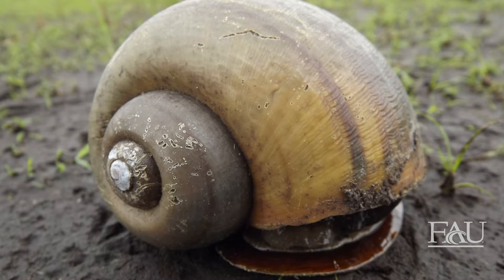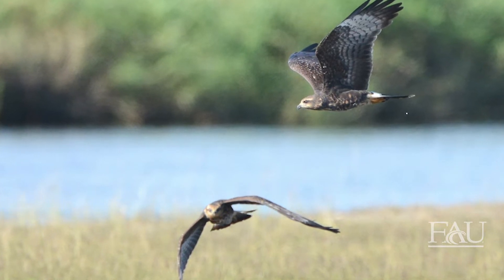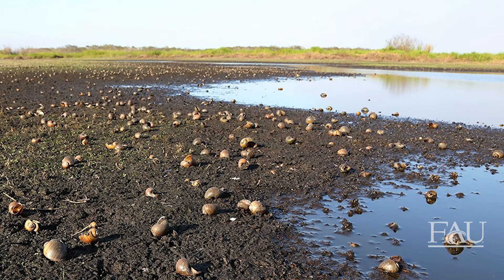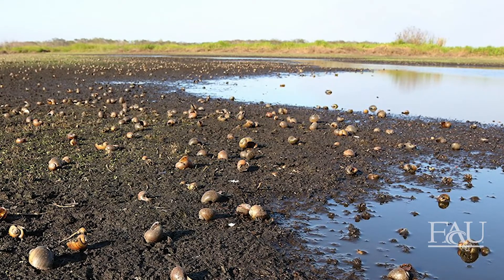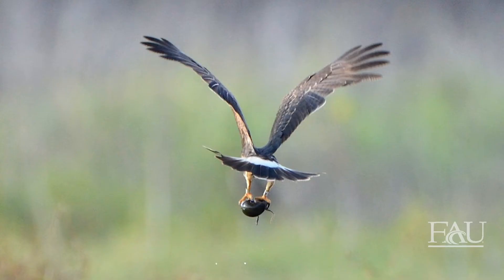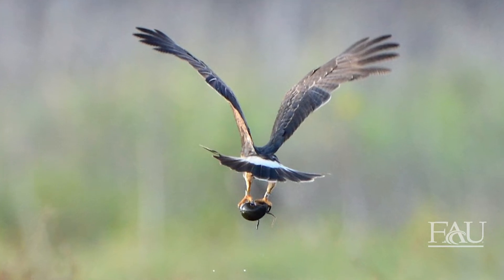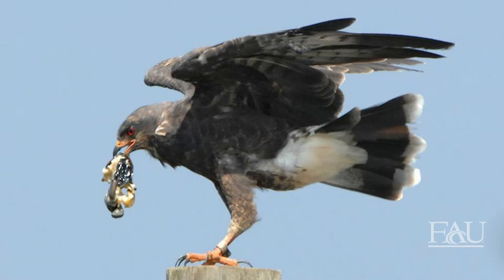Apple snails serve as the primary food source for the endangered snail kite. Initially, scientists were worried that the invasion of the non-native apple snail would cause a problem for snail kites. Scientists are now studying the interactions and populations of both snail kites and both apple snail species. Snail kites use their curved beaks to reach into the apple snail opening, called the operculum, to eat the snail. It turns out that snail kites are actually evolving to adapt to eat the larger, more abundant non-native apple snail.